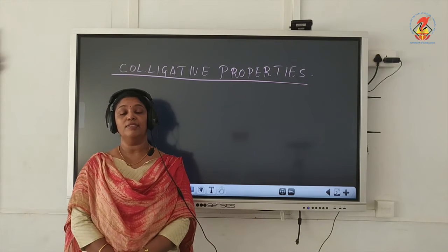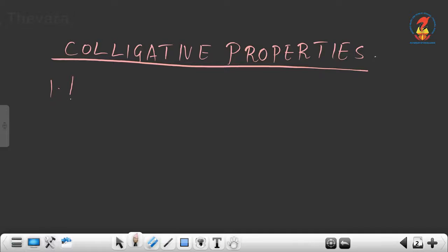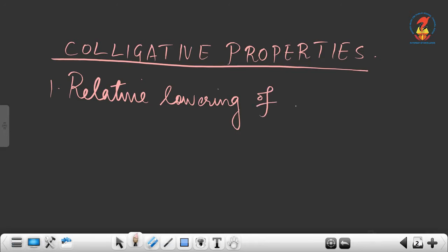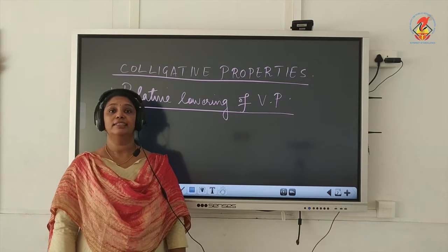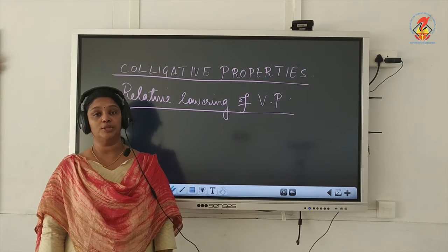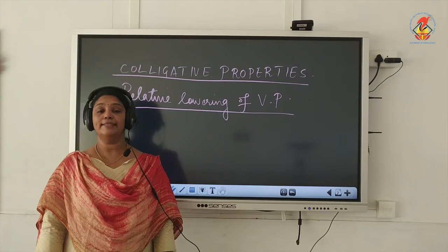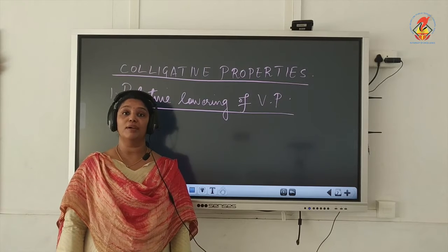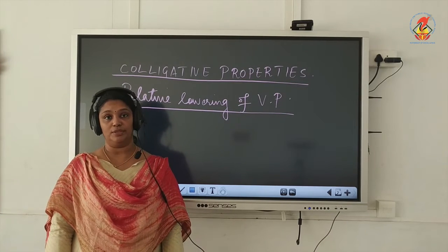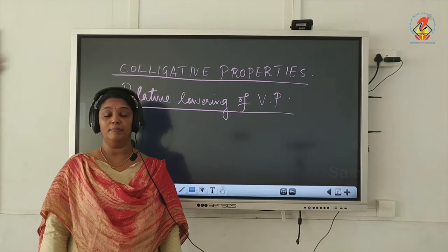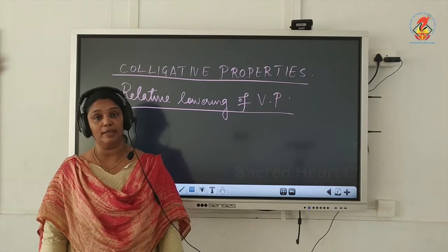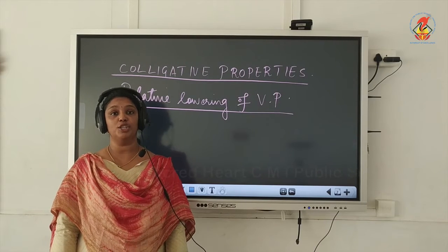The first colligative property is relative lowering of vapour pressure of solvent. There are two questions here: first, show that the relative lowering of vapour pressure of a solvent is equal to the mole fraction of solute; and second, calculate the molecular mass of a solute from relative lowering of vapour pressure. Relative lowering of vapour pressure is a colligative property because it depends upon the number of solute particles present but does not depend upon their nature.